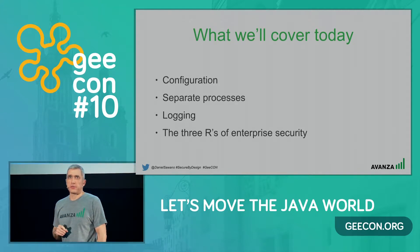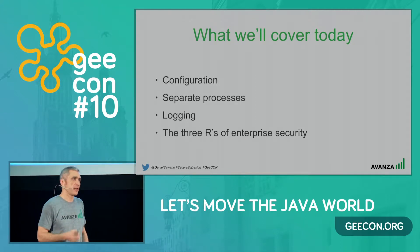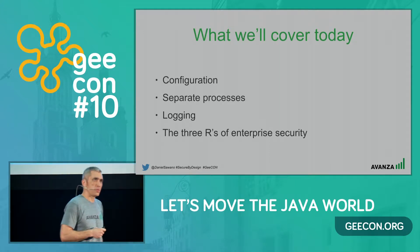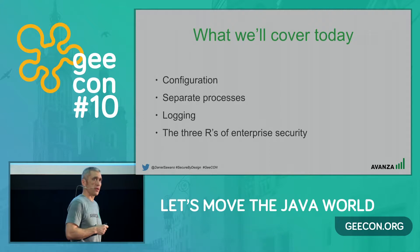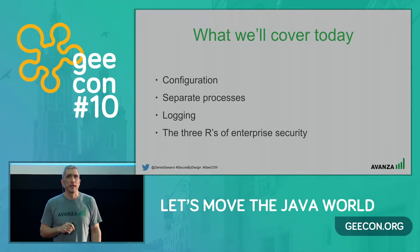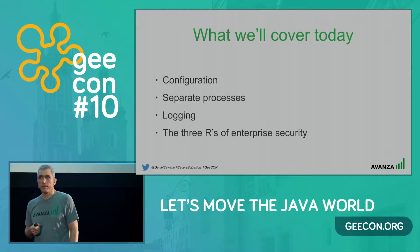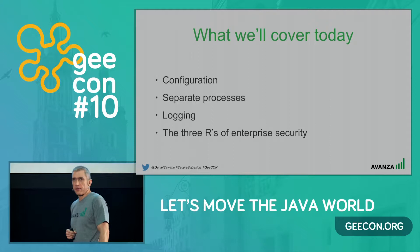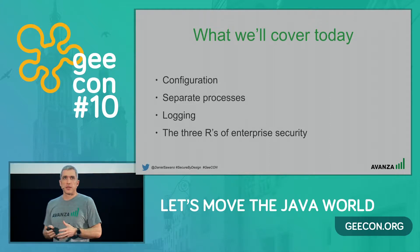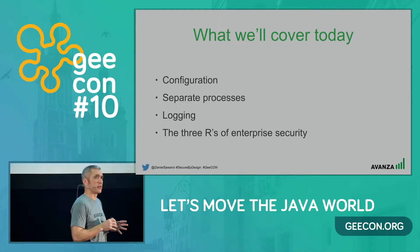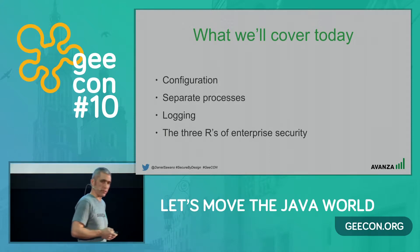We're going to look at how we can handle application configuration in a way that makes our systems more secure, how we can treat application processes in a way that also improves security, and how we should deal with logging so we're not leaking sensitive information. At the end, we'll see how everything can come together in an approach called the three R's of enterprise security.